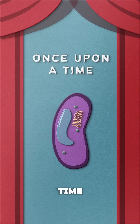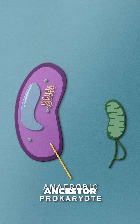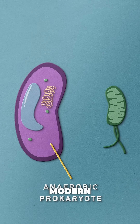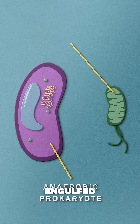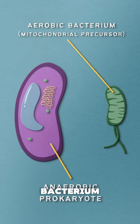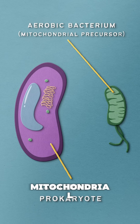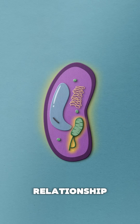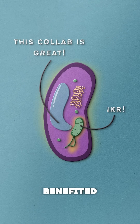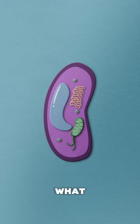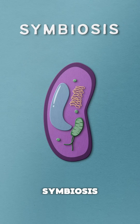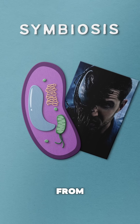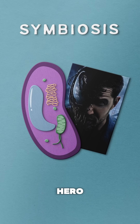Once upon a time, an anaerobic prokaryote — the ancestor of modern eukaryotic cells — engulfed an aerobic bacterium, the mitochondrial precursor, and established a relationship where both organisms benefited from each other's presence. This is what we call symbiosis, much like Venom and Brock from your favorite web-slinging hero.